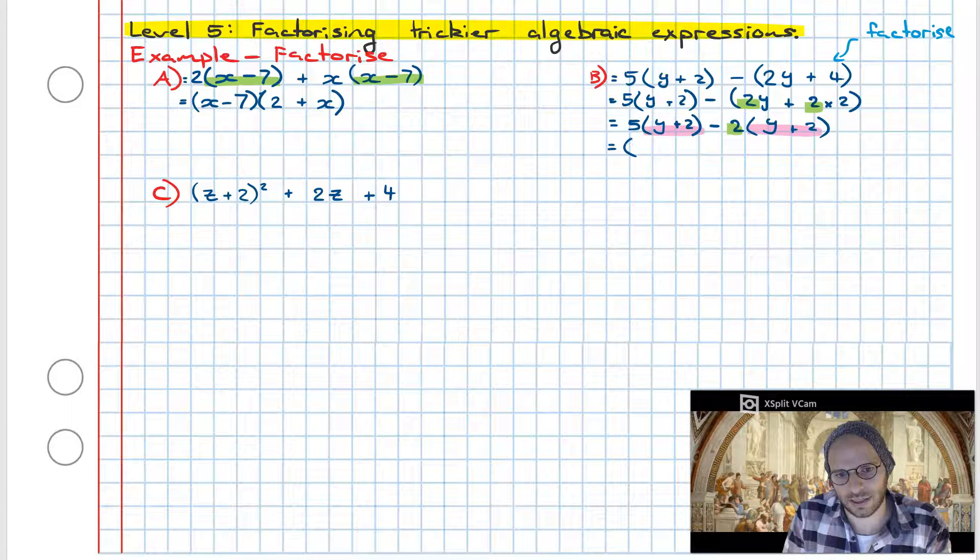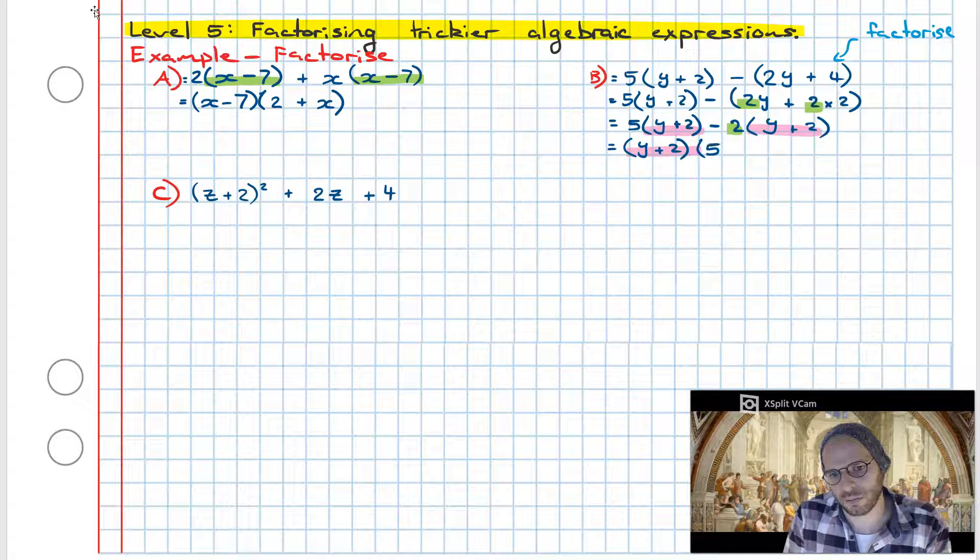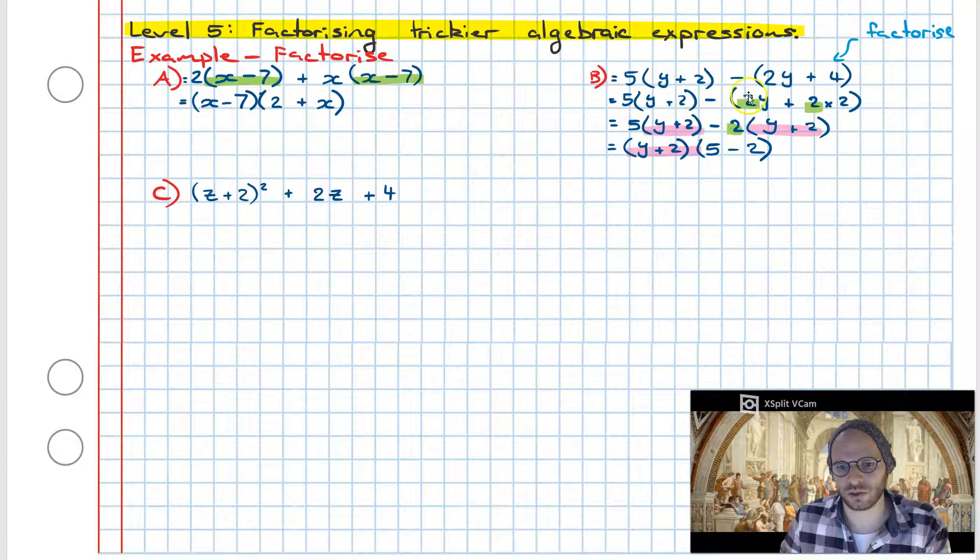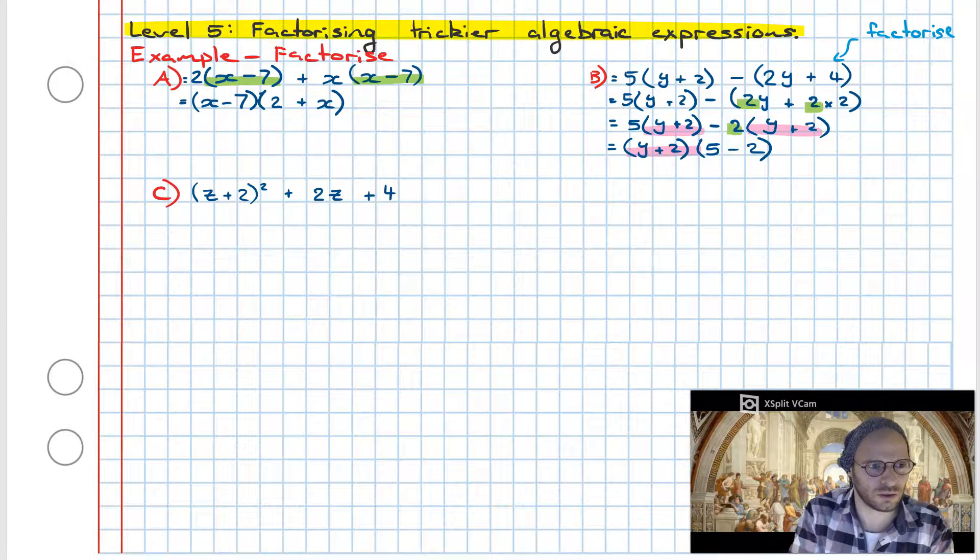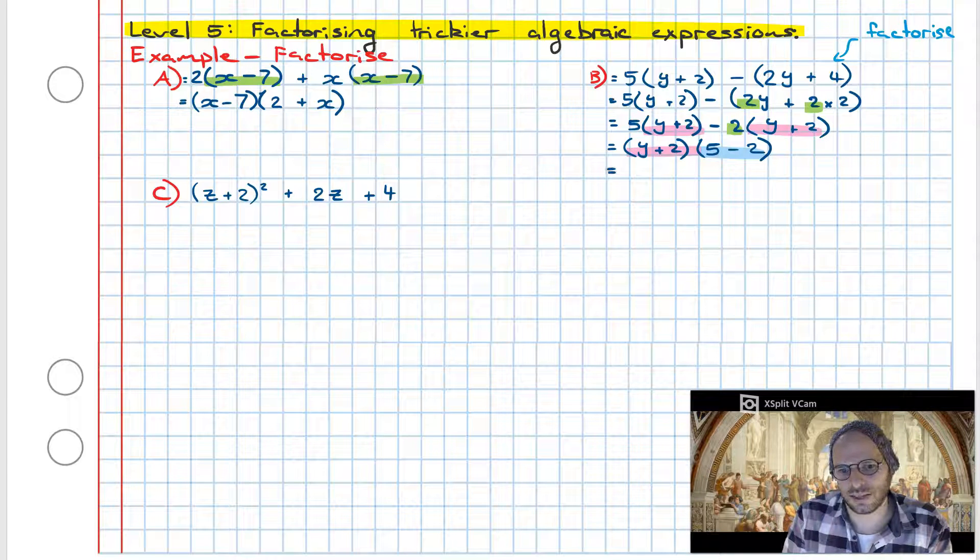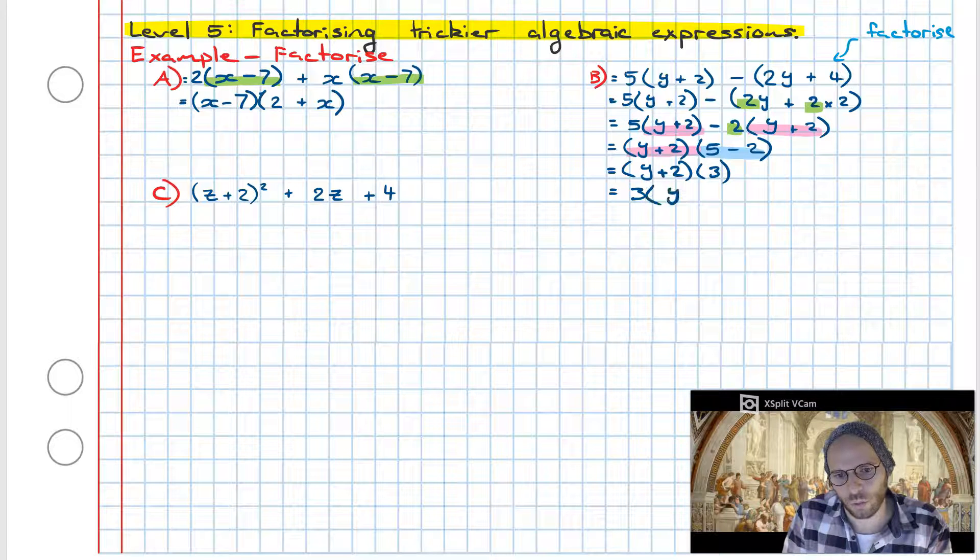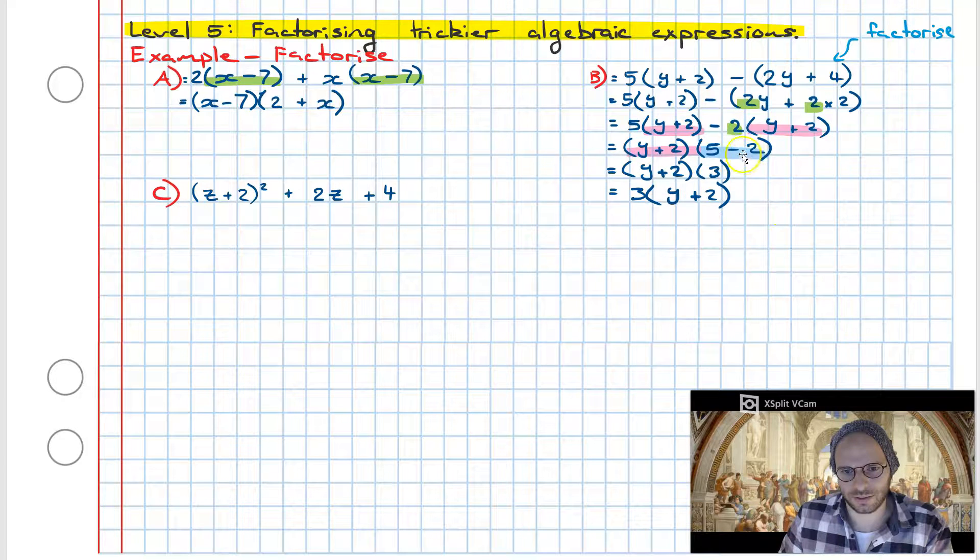Taking a closer look at what we have in common, we've got a y plus 2 and we've got a y plus 2. Factorizing this we're going to get y plus 2 like so, and what we leave behind is in open brackets: we have a 5, the operation is negative, and the left behind value is 2. So the factorization is y plus 2 multiplied by 5 minus 2. Now we can go one step further in that 5 minus 2 is 3, therefore rewriting this out we get 3 times y plus 2 and therefore we are done.